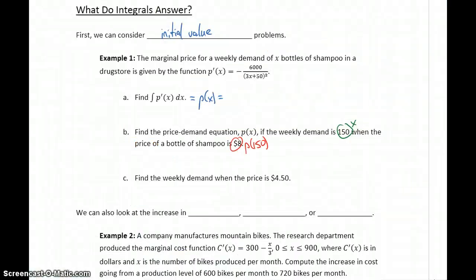Meaning we have a price demand function, p of x, that's equal to 2,000 over 3x plus 50. And now instead of plus c, that constant, we've solved, given that initial value information, to know that that function is plus 4.